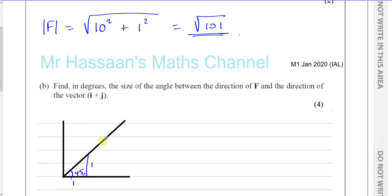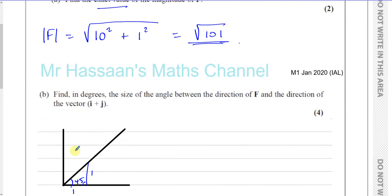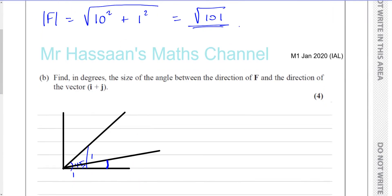Okay, and our force F is 10i plus j. So, 10i plus j, you're going to have 10 units horizontally and one unit vertically. So it will look something like this. It will be kind of like a small angle there. That's the angle that's formed between 10i plus j. That's the angle made with the x-axis or the horizontal.